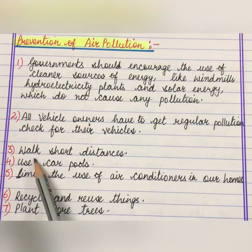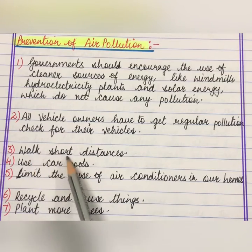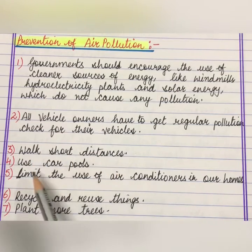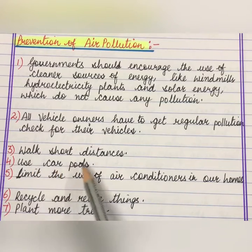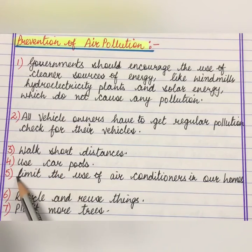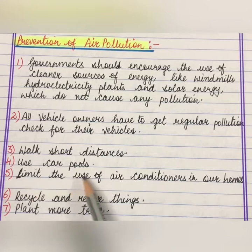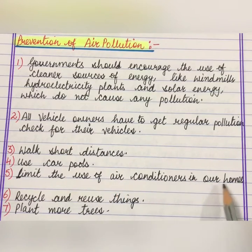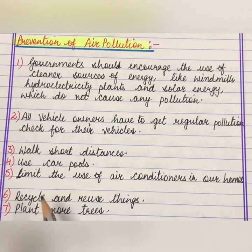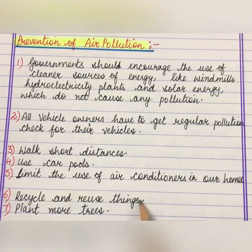Number three, walk short distances. Number four, use car pools. Number five, limit the use of air conditioners in our homes. Number six, recycle and reuse things. Last, plant more trees.